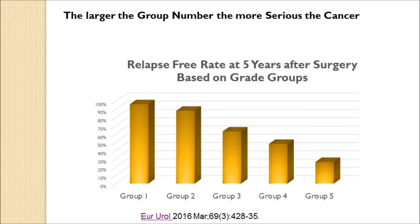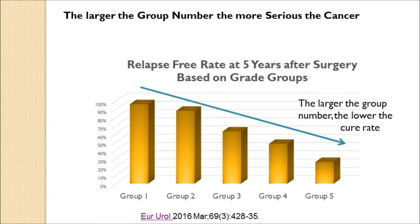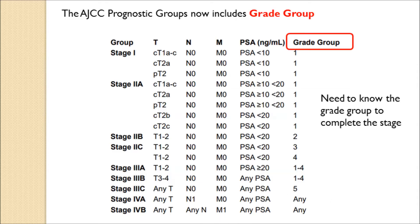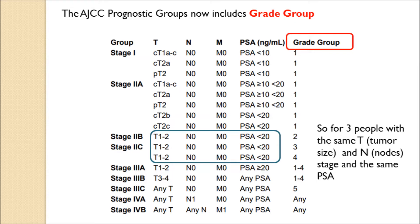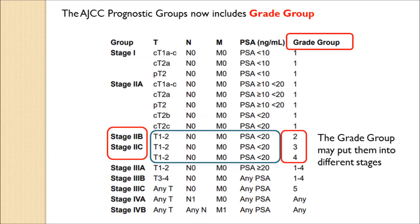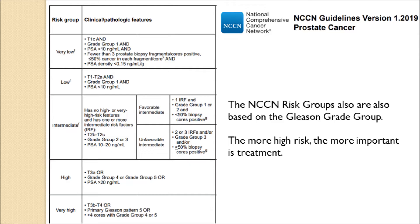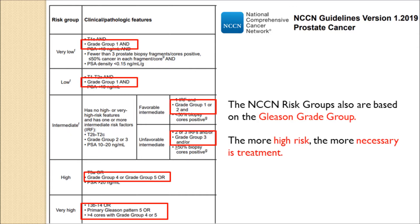The grade groups have been shown to predict overall outcome — the higher the grade group, the lower the cure rate. It's necessary to understand these grade groups because they're used in the new staging system. For example, three patients with the same tumor size, lymph node stage, and PSA but different grade groups would be moved into different overall stages. The grade groups are also used in the NCCN — National Comprehensive Cancer Network — prognostic groups, figuring significantly into each risk group, which determines what type of treatment is appropriate.